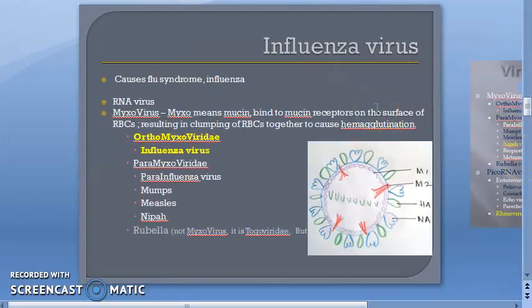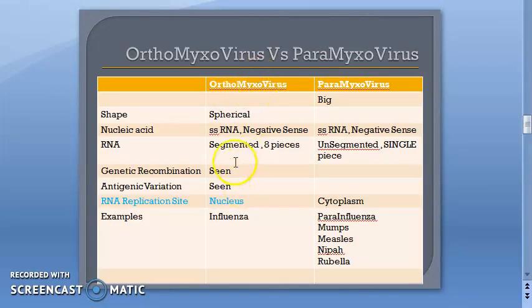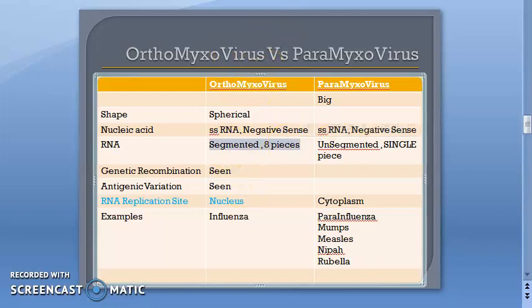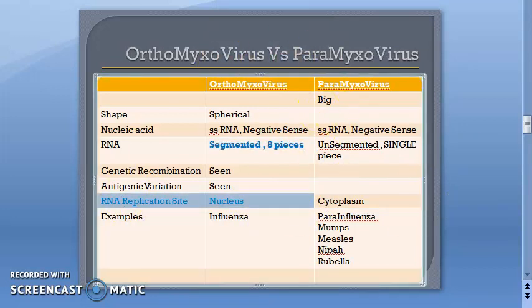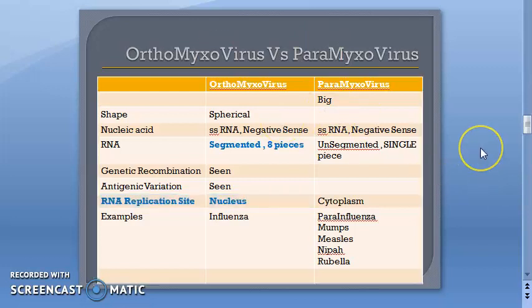The influenza virus is classified as an orthomyxovirus. It is a myxovirus that causes hemagglutination. 'Ortho' refers to eight — it has eight segments of single-stranded RNA. The key unique feature of orthomyxovirus is that the replication of the RNA occurs in the nucleus of the host cell.